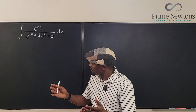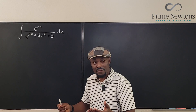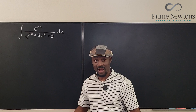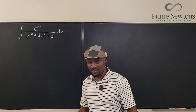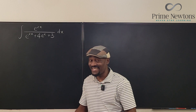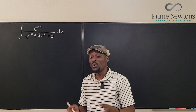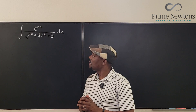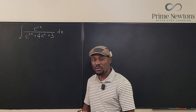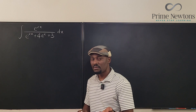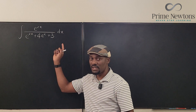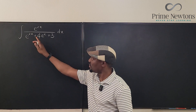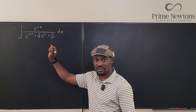So what would we do? One option is to convert this into a polynomial using a u-substitution. We'll rewrite it as a polynomial to see what else we can do. The most important question is: what should be your u? Should it be the whole denominator, e to the 2x, or e to the x?